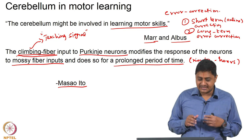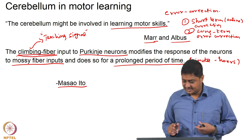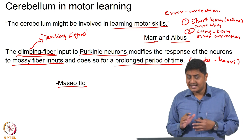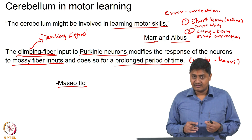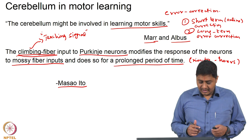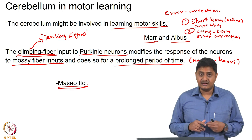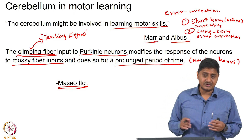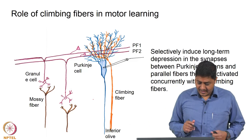The climbing fiber may not teach how to do things correctly, but at least it teaches how not to do it. The climbing fiber input modulates the response of Purkinje cells to mossy fiber inputs for relatively long periods lasting from several minutes to several hours. This idea was propagated by Masao Ito and was well supported in several experimental studies.